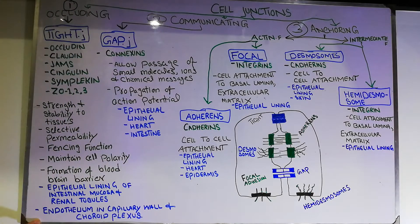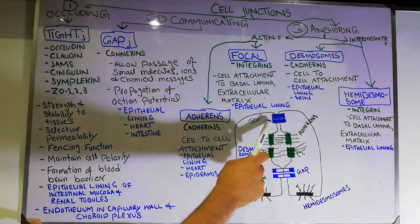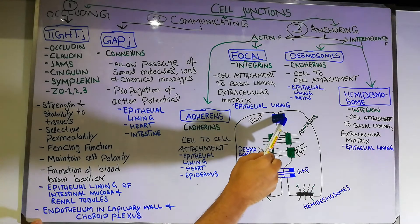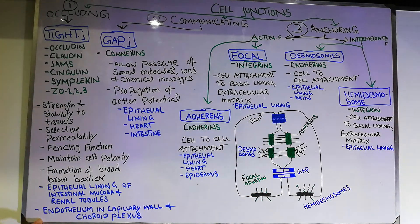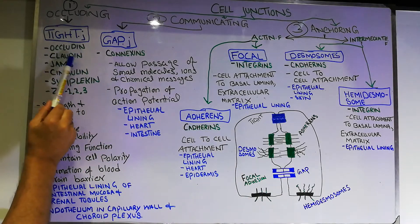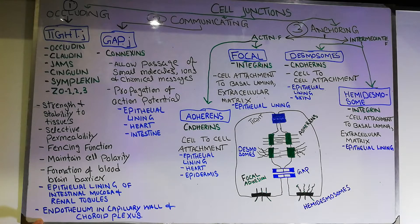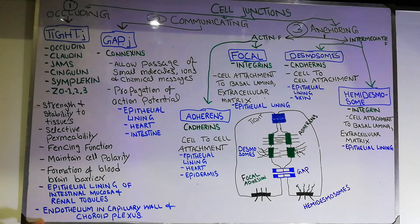The first type is occluding junctions, and the example of occluding junctions is tight junctions. Tight junctions are intercellular junctions present between two different cells. There are two components: one component comes from one cell and the other from the neighboring cell, and they unite to make a ridge. This junction is made of different types of proteins, which may be occludins, claudins, JAMs, cingulin, symplekin, and ZO-1, 2, 3. Some of these proteins are membrane proteins and some are cytoplasmic proteins.